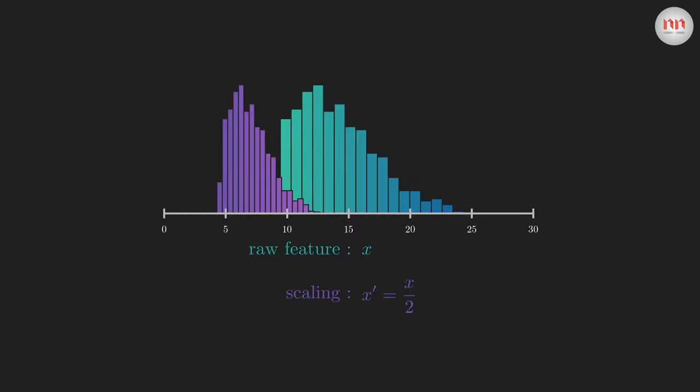We can also subtract a number first, and then divide it by another number. Here, I'm subtracting by 7, and then dividing by 2. This shifts the histogram to the left and shrinks it. Here, I chose the subtracting and scaling factors randomly. But if we choose some specific values for them, then we achieve normalization.